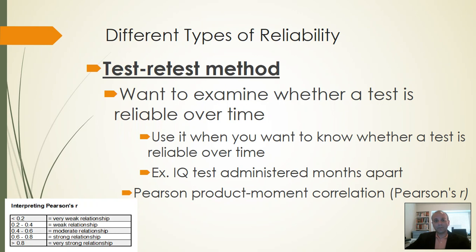First and foremost, the test-retest method — used when you want to examine whether a test is reliable over time. For example, if looking at an IQ test, if everybody was administered an IQ test in April and then again in October, the results should be fairly similar. That's reliable — the instrument shouldn't have a score of 120 on the April test and then 80 on the October test; there's probably something wrong with your instrument.